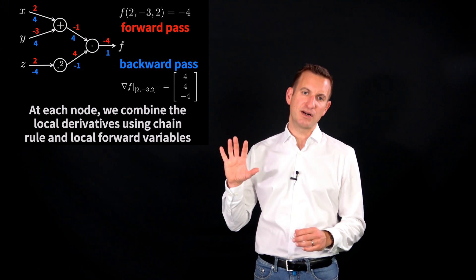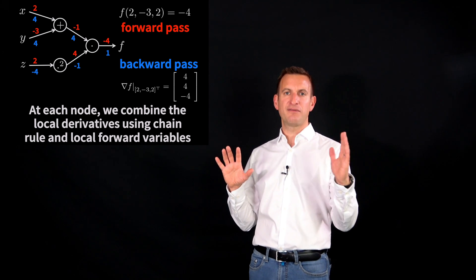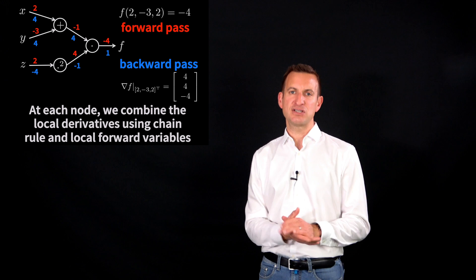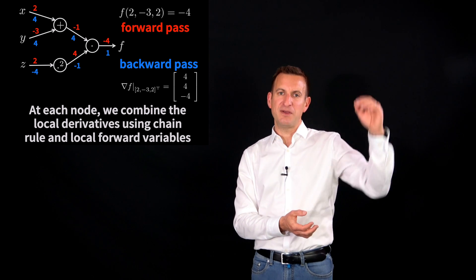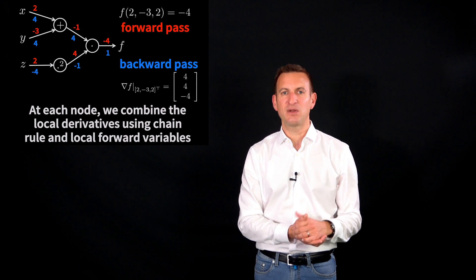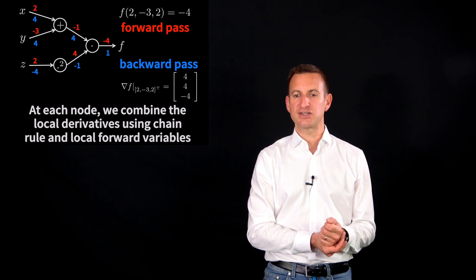And so on the backwards path, we are using the information of the local variables we have stored before and the information of the first derivatives and can propagate this information backwards. So if we again end up at the left-hand side, we actually get the gradient for that specific location.